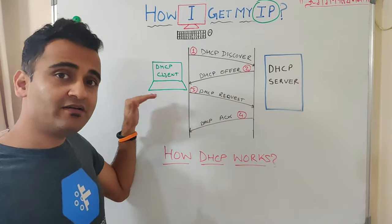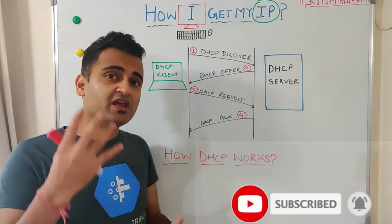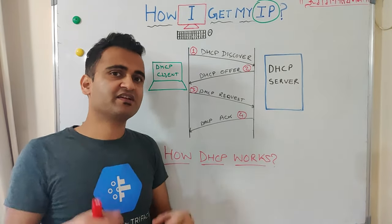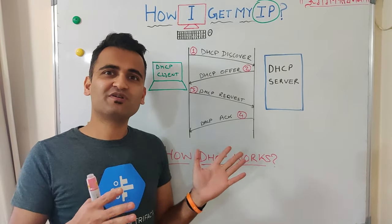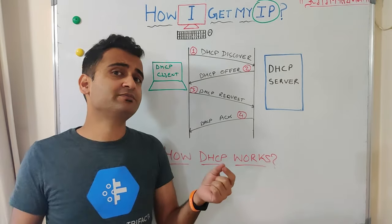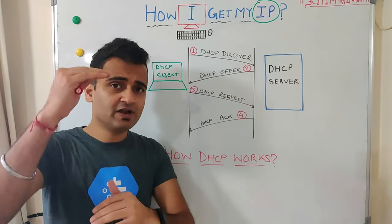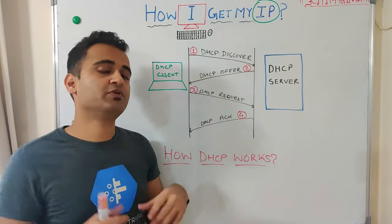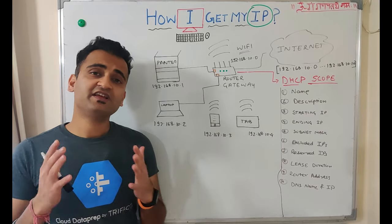Once the DHCP client receives the acknowledgement, it configures its TCP/IP network settings based on the information provided. In these four straightforward steps, a DHCP client talks to a DHCP server, gets its IP address, and the moment it receives its IP with all the other network details, it becomes a live entity over the network. But what happens inside the DHCP server is defined by the DHCP scope, which we will understand in the next section.